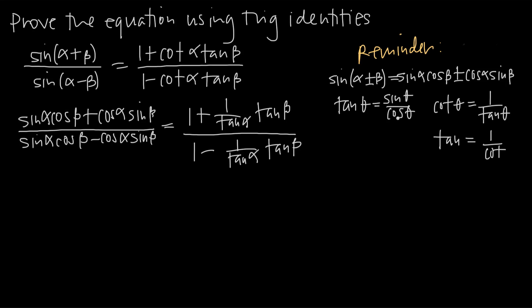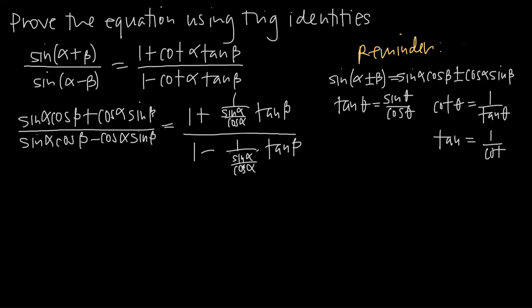We also use the quotient identity: tangent of any angle equals sine over cosine. So 1 over tangent(alpha) becomes 1 over (sine(alpha)/cosine(alpha)). Dividing by a fraction is the same as multiplying by its reciprocal, so 1 over (sine(alpha)/cosine(alpha)) simply becomes cosine(alpha) over sine(alpha). Both instances become cosine(alpha) over sine(alpha).